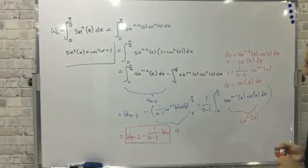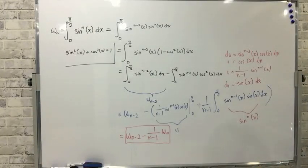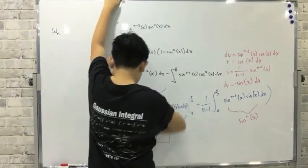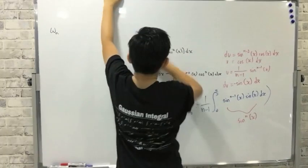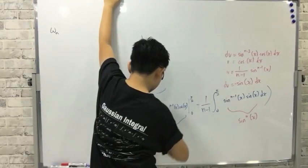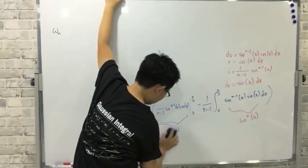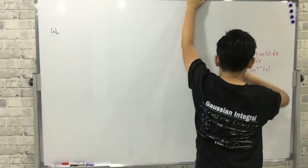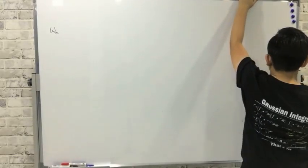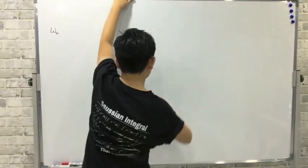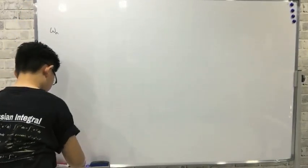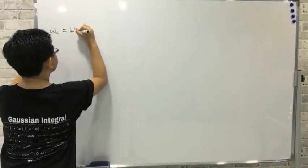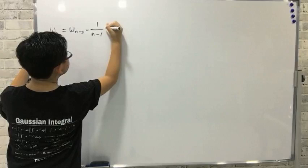Well, this is a recursive formula. But now we have to figure out what Wn actually equals. So I'm going to erase everything and write the identity that we have: Wn equals Wn minus 2 minus 1 over n minus 1 times W of n.